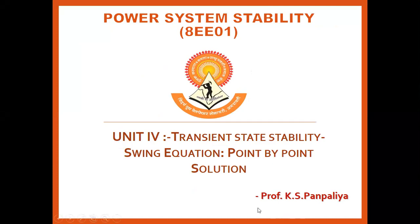Hello everyone. In today's lecture we will discuss another topic in unit number four: the swing equation, with respect to the point-to-point solution of the swing equation under transient state stability. The swing equation is generally used to find the dynamics of the accelerating power with respect to delta, and how much power we are getting at the synchronous machine under dynamic or steady state conditions.